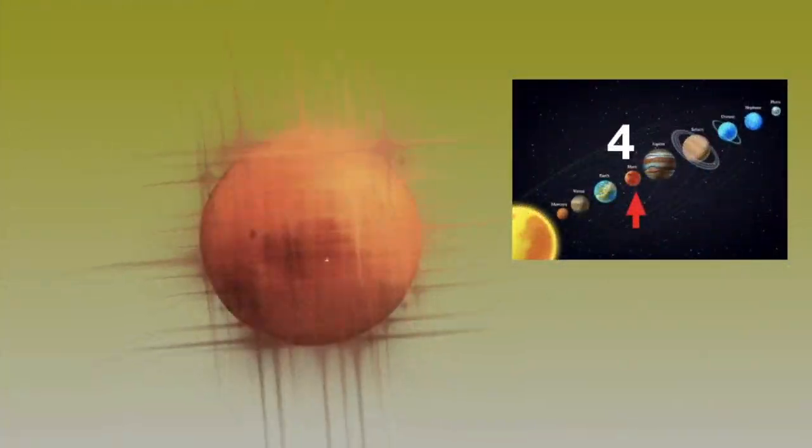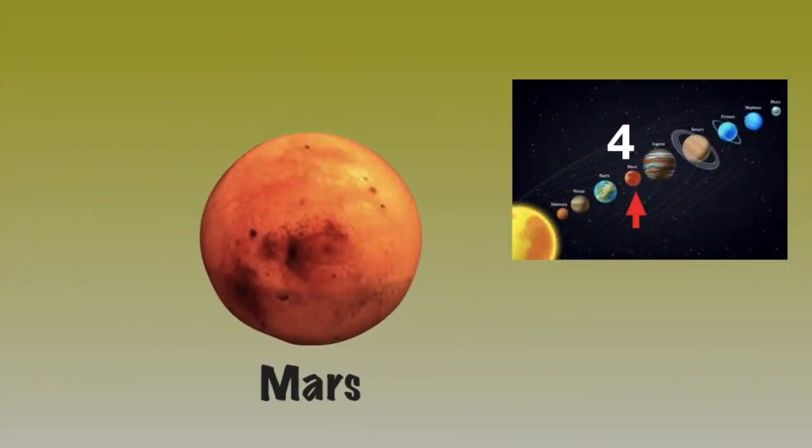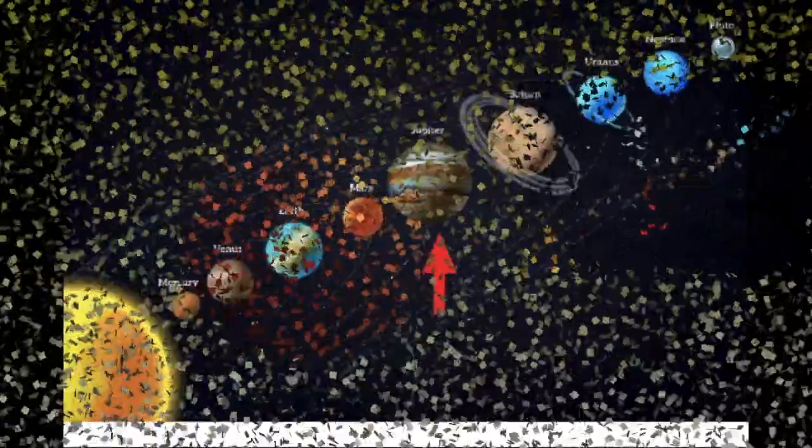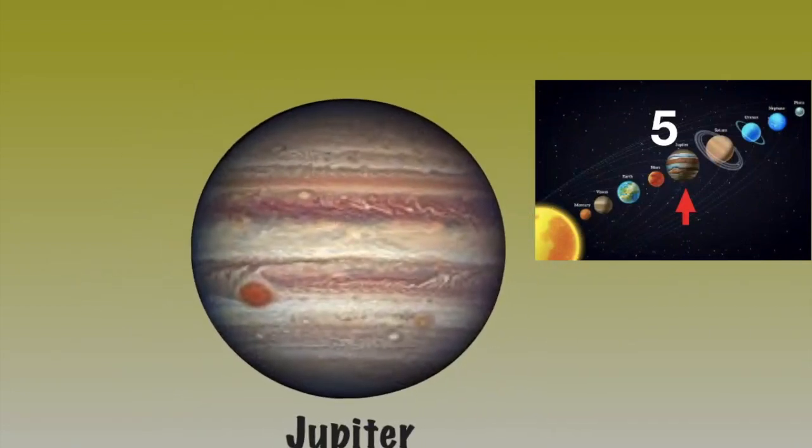The fourth planet is the red planet Mars. The fifth planet is the largest planet, that is Jupiter.